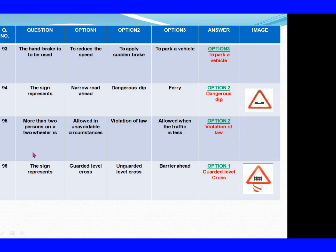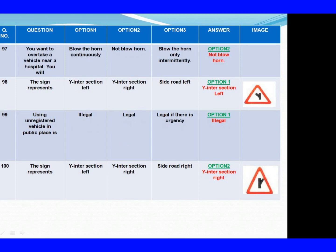Question 96: The sign represents. Option 1: Guarded level crossing. Option 2: Unguarded level crossing. Option 3: Where are you? The right answer is Option 1: Guarded level crossing. Question 97: You want to overtake a vehicle near a hospital. You will. Option 1: Blow the horn continuously. Option 2: Not blow horn. Option 3: Blow the horn only intermittently. The right answer is Option 2: Not blow horn.